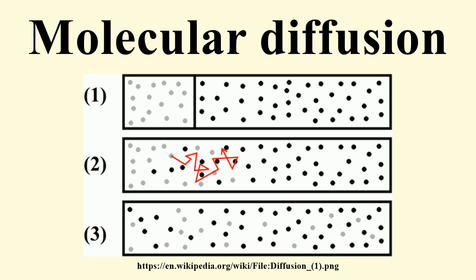In cell biology, diffusion is a main form of transport for necessary materials such as amino acids within cells. Diffusion of water through a partially permeable membrane is classified as osmosis. Metabolism and respiration rely in part upon diffusion in addition to bulk or active processes.